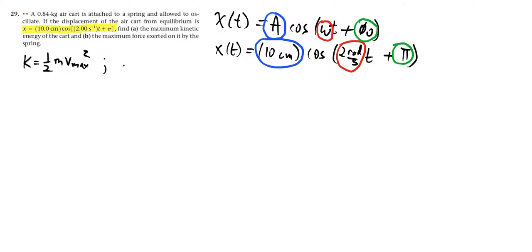If we look back at our notes, we see that for a simple harmonic oscillator, the maximum speed has the form a times omega, so it's the amplitude times the angular frequency.